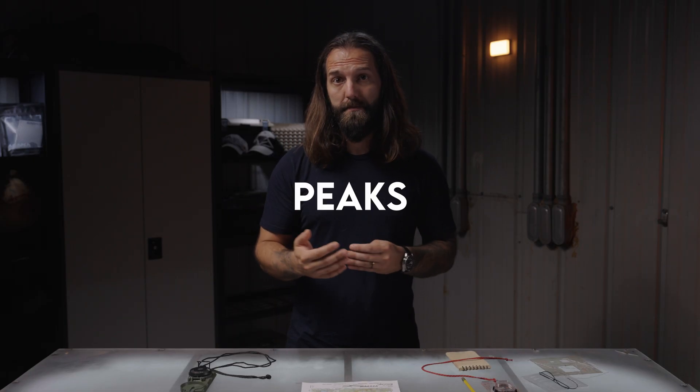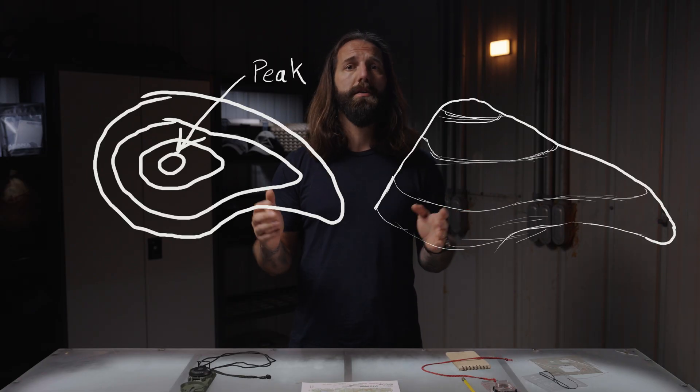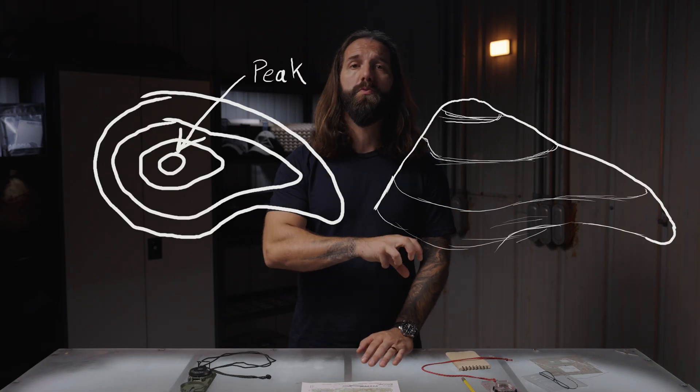This system also allows us to identify terrain features. The first and easiest to identify is a peak. A peak is where the contour line is completely enclosed with no other contour lines on the inside — it is the highest point in elevation of that feature.